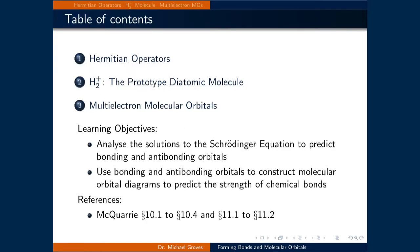This lecture will be delivered in three parts. In the first part, we will define what it means for an operator to be Hermitian. We will use this property in the second part, where we will examine how H2+ arranges its orbitals to make bonding and antibonding orbitals. Finally, in the third part, we will extrapolate from the molecular orbital solutions of H2+ to build molecular orbital diagrams of diatomic molecules, and see how we can use them to predict the strength of bonds between atoms.